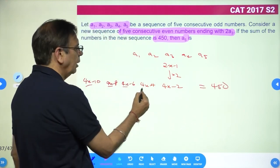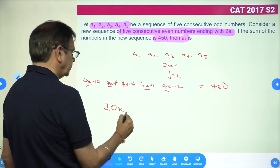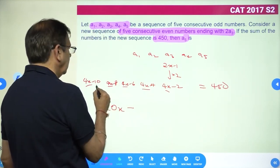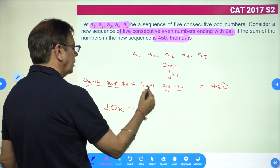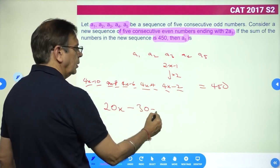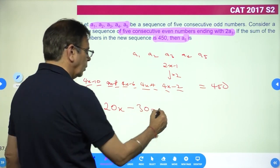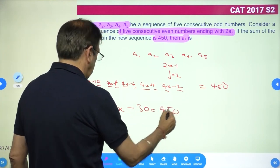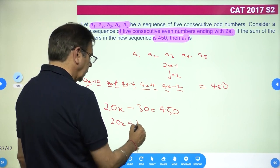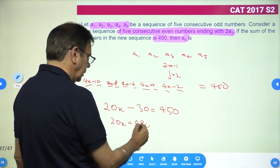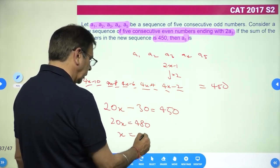The coefficients are 4, 8, 12, 16, 20 - that's 20x. Minus 10, 20, 30. This is equal to 450. So 20x minus 30 equals 450. 20x equals 450 plus 30, which is 480. So x is equal to 24.